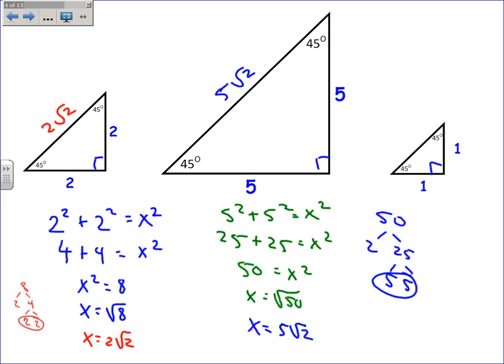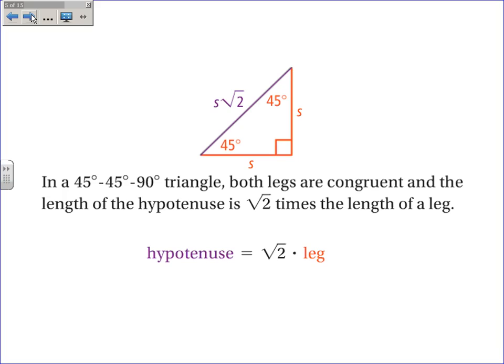If we did the last one, we would get 1 root 2. So you'll notice there's a pattern: if the leg is 2, the hypotenuse is 2 root 2; if the leg is 5, the hypotenuse is 5 root 2; if the leg is 1, it's 1 root 2. The textbook puts it this way: in a 45-45-90 triangle, both legs are congruent, and the length of the hypotenuse is root 2 times the length of the leg. This equation is pretty helpful.